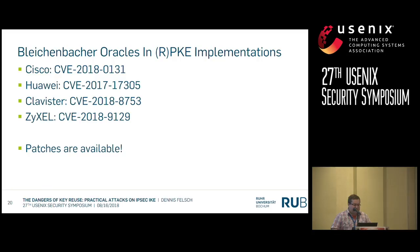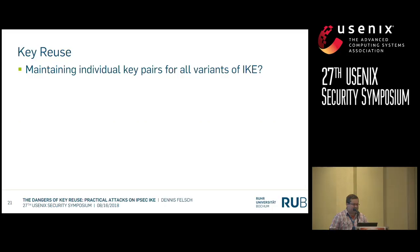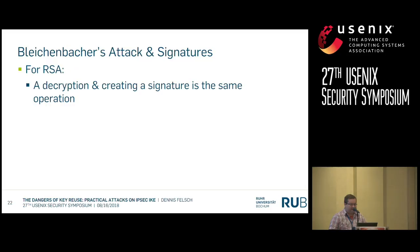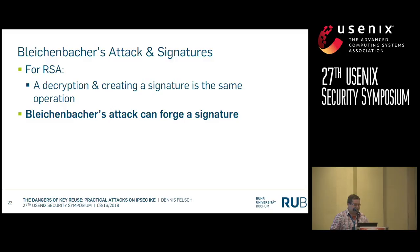The paper is also about key reuse. When configuring IKE, administrators typically do not maintain individual key pairs for all IKE variants — the common practice is a single RSA key pair. With Huawei, their device's RSA key pair is also used for SSH host identification. The actual security of the whole setup depends on cross-cipher-suite, cross-version, and cross-protocol security. And notably, for RSA, decryption and creating a signature are the same operation — so Bleichenbacher attacks can forge signatures.